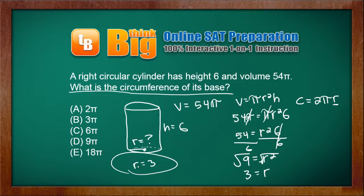Final step. Take the radius and plug it into the formula for the circumference of a circle. c equals 2 pi times 3, which simplifies to 2 times 3, 6 pi.